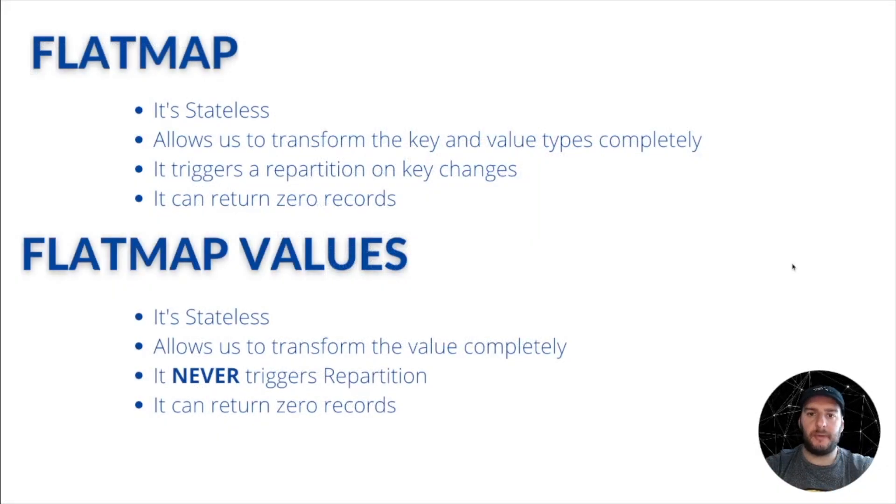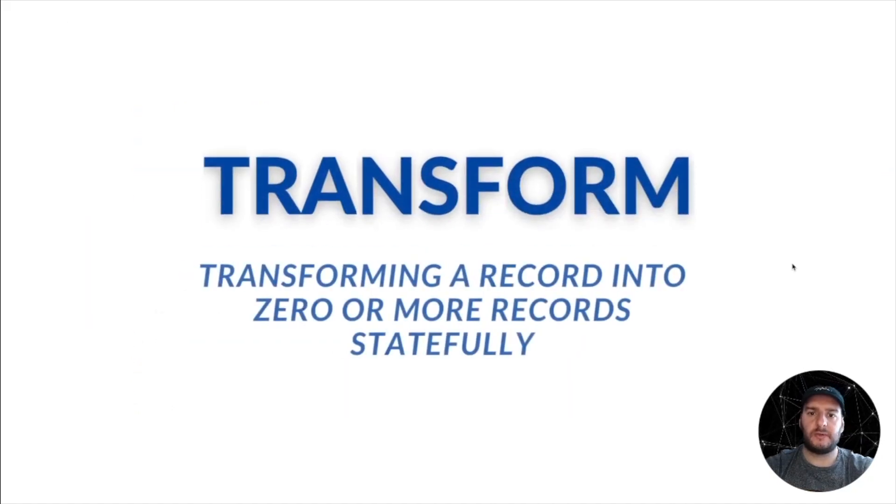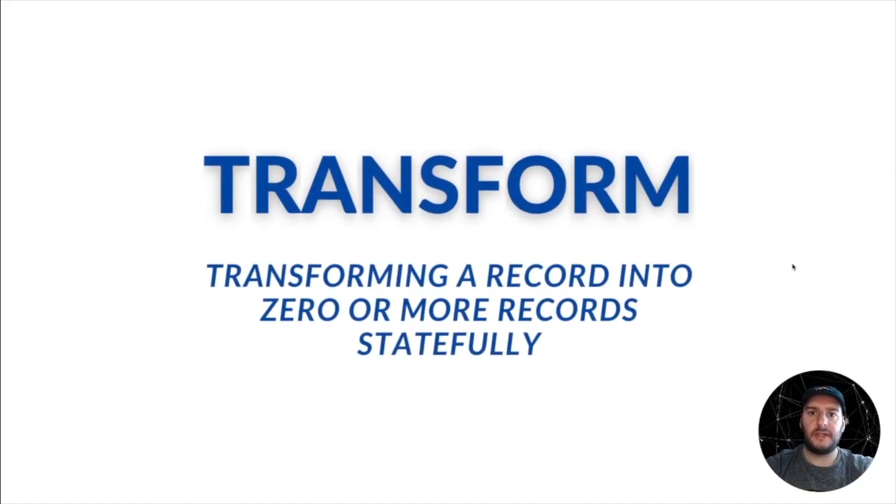An operation that we haven't discussed yet is one called transform. We actually haven't used this one in any of our tutorials. And the reason why is because it uses the processor API, which we haven't really spoken about. This operation allows us to transform a record into zero or multiple records using stateful operations.